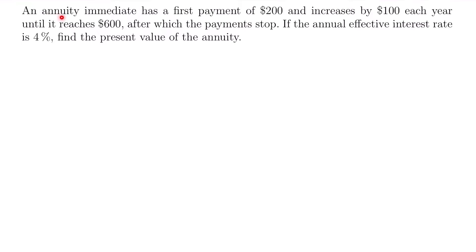Let's look at our next example. An annuity immediate has a first payment of $200 and increases by $100 each year until it reaches $600, after which the payments stop. If the annual effective interest rate is 4%, find the present value of the annuity. In this scenario we are looking for a present value. We know it's an annuity immediate, and the payments are increasing by $100 each year, so we have an arithmetic increasing annuity.